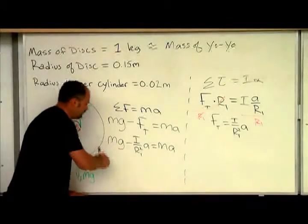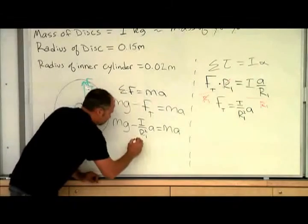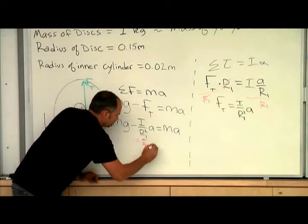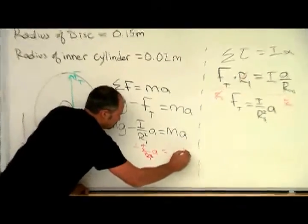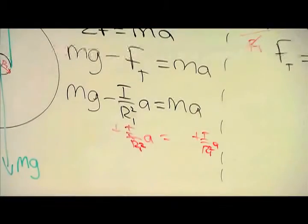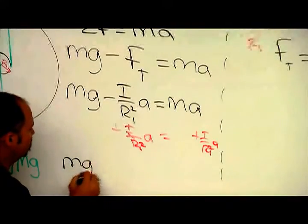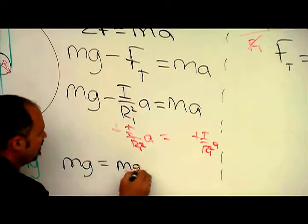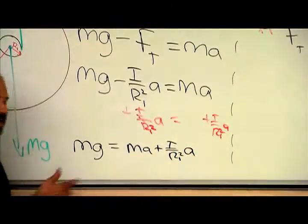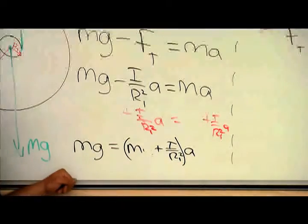And then if I solve for acceleration, so I'll bring this term over here, so plus this business on both sides. And I end up getting this, I get mg equals ma plus i over r1 squared a.